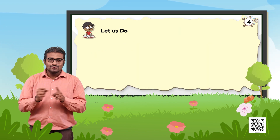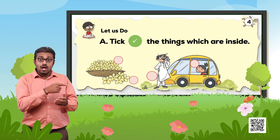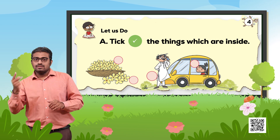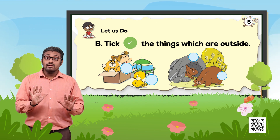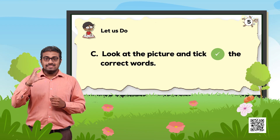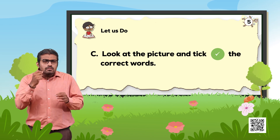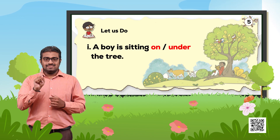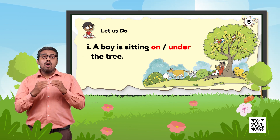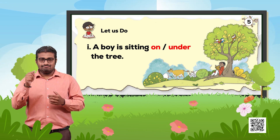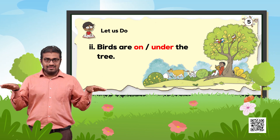Let us do. A: Tick the things which are inside. B: Tick the things which are outside. C: Observe the picture and tick the correct words. 1. A boy is sitting on or under the tree. 2. Birds are on or under the tree.